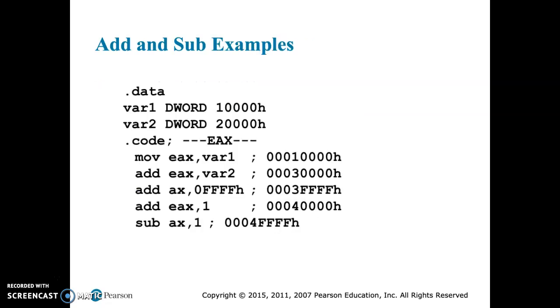So a few examples here. We've defined two variables, dwords. One has a value of 1,000h and the other 2,000h. In our first command, we move the first one into our EAX register, and then we are going to add the value of the second one to the EAX register.